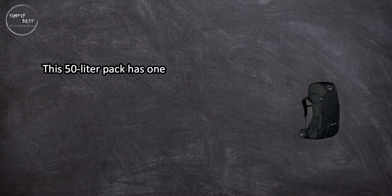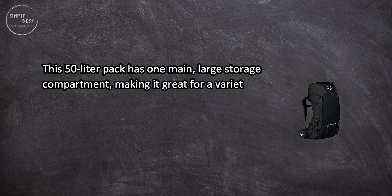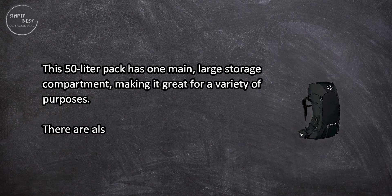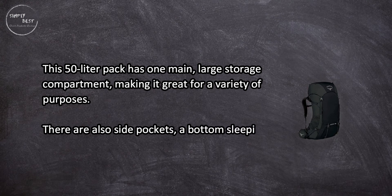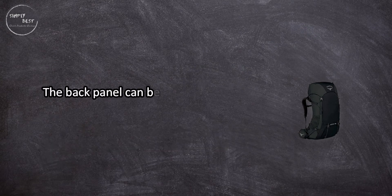This 50 liter pack has one main large storage compartment, making it great for a variety of purposes. There are also side pockets, a bottom sleeping bag compartment, and sleeve for a hydration bladder. The back panel can be adjusted to increase airflow. Comes with a built-in rainfly.